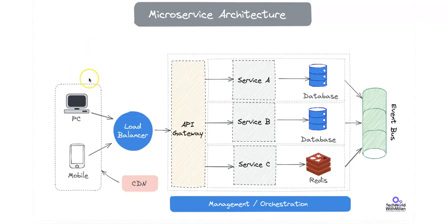On the left, we have the client devices — for example, PC or mobile — and this is the interaction layer. Client devices, whether web-based, PC or mobile, will initiate HTTP or HTTPS requests. These can also be REST or gRPC-based requests, depending on the architecture's communication pattern. Clients typically consume APIs exposed by the backend via the API gateway.